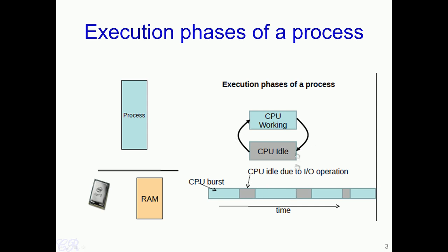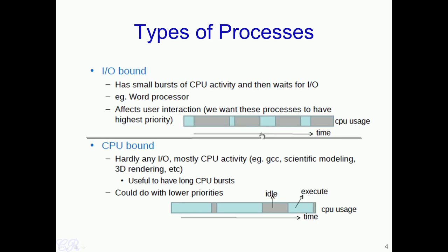Based on these phases of execution, one can classify processes into two types: IO bound processes and CPU bound processes. We make this distinction from a scheduling perspective. We would like to give IO bound processes a higher priority with which they are allocated the CPU — essentially, IO bound processes should wait lesser time for the CPU compared to CPU bound processes.